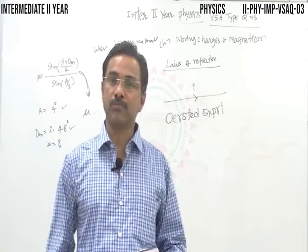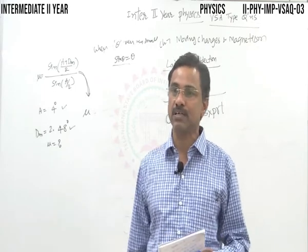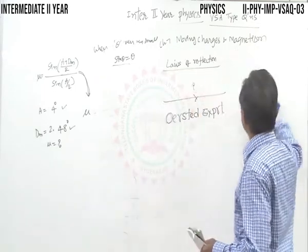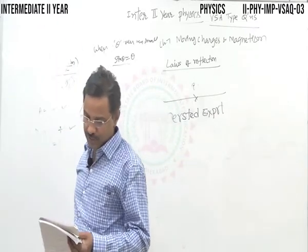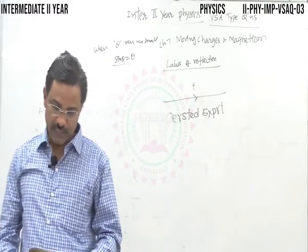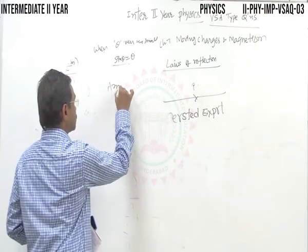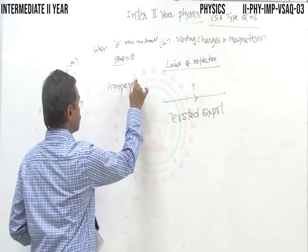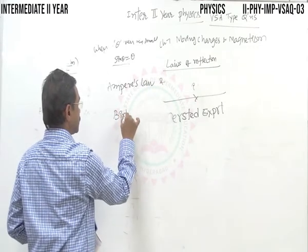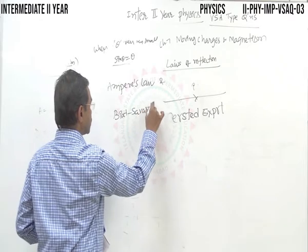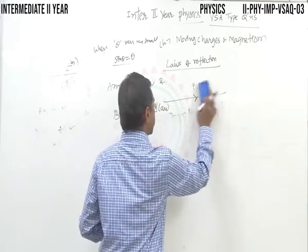The most important question: state Ampere's law and Biot-Savart's law — these are the 2-marks very short answer questions.